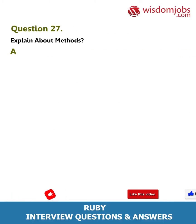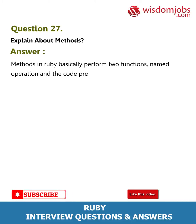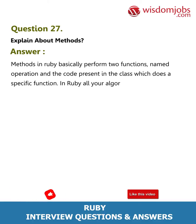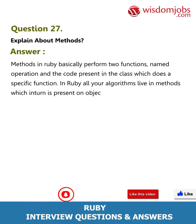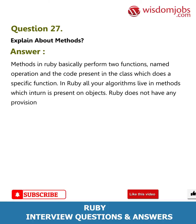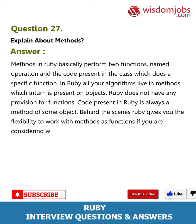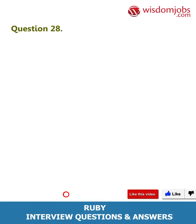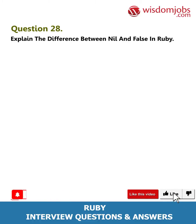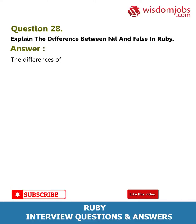Question 27: Explain about methods. Answer: Methods in Ruby basically perform two functions: named operation and the code present in the class which does a specific function. In Ruby, all your algorithms live in methods, which in turn are present on objects. Ruby does not have any provision for standalone functions; code present in Ruby is always a method of some object. Ruby gives you the flexibility to work with methods as functions if you are used to working with other languages.